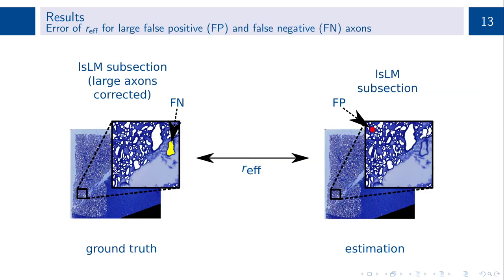To estimate the error introduced by large false positively detected or false negatively missed axons, we compared the LSLM-based estimations of the effective radius to a reference that was corrected for these errors. Large false positively detected axons marked in red were only considered for the estimated effective radius, whereas large false negatively missed axons marked in yellow were considered only for the ground truth. The remaining white axons were obtained from the estimated axon ensemble and were used in both cases.